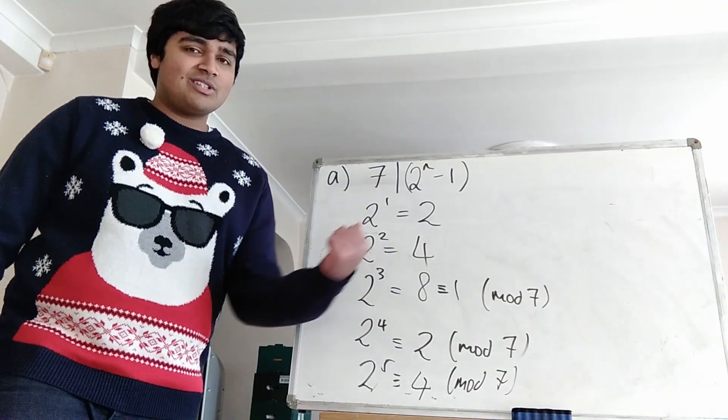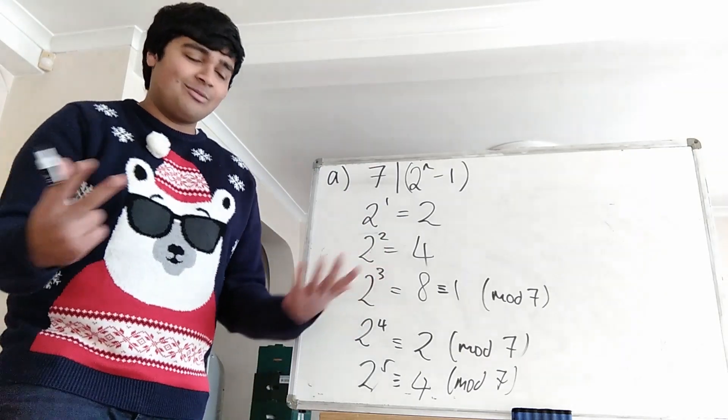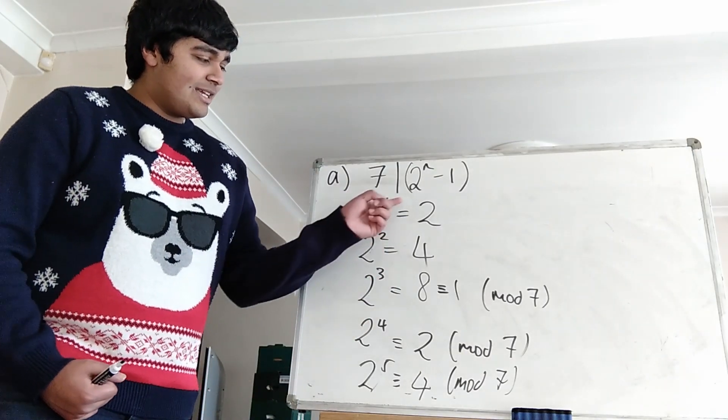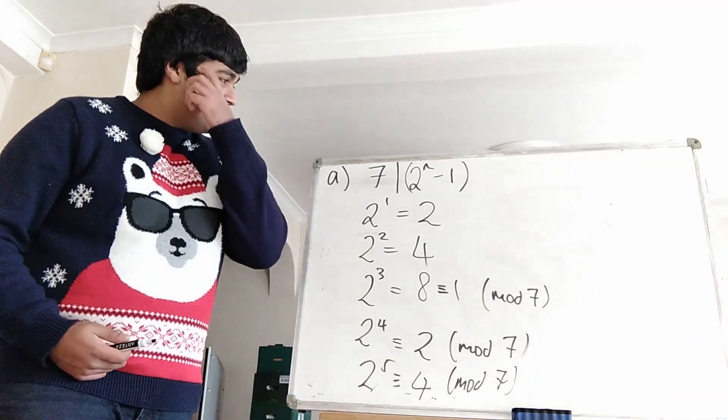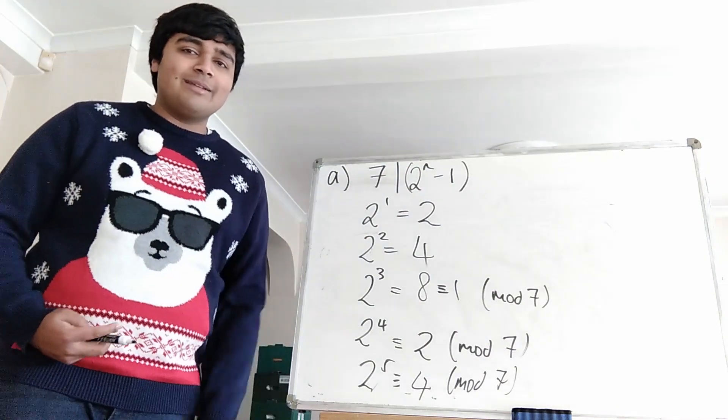That's 2 to the 6 which is 64 which is 1 more than 63 and 63 is a multiple of 7. So we're going to get this pattern: 2, 4, 1, 2, 4, 1 and that's the residues of 2 to the n when you look at it mod 7.